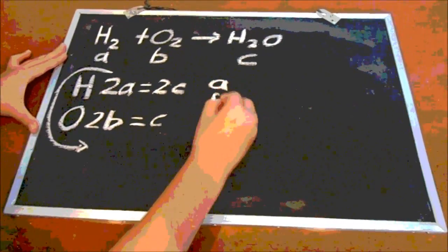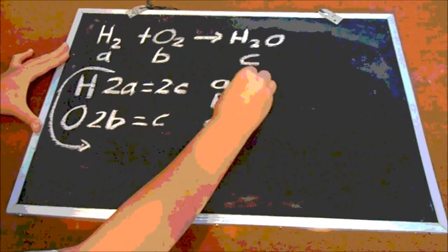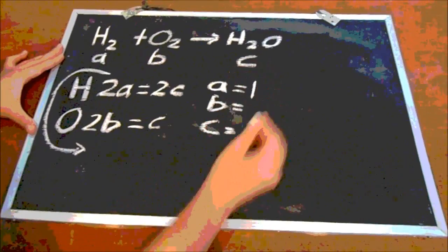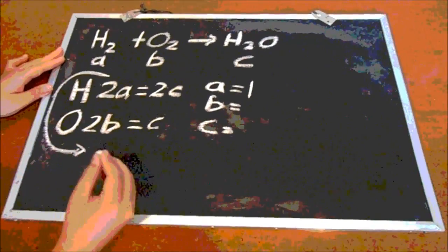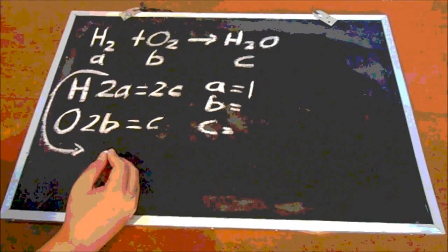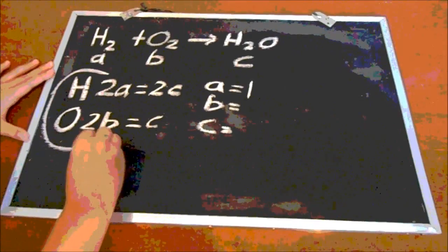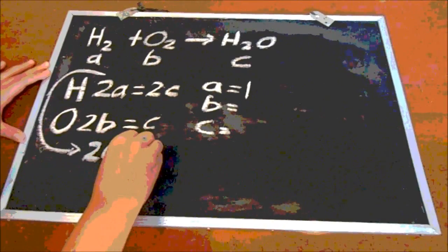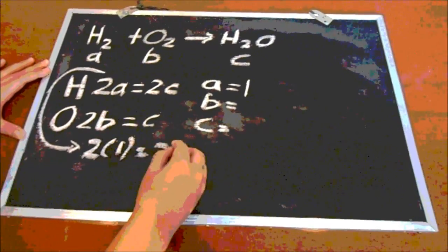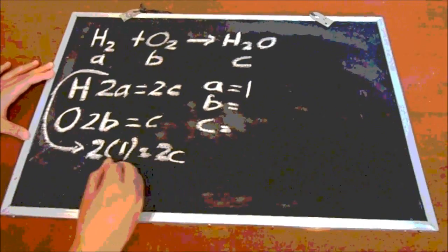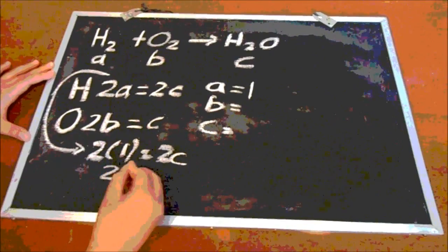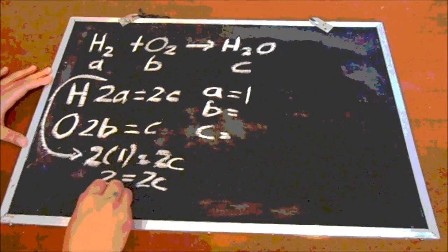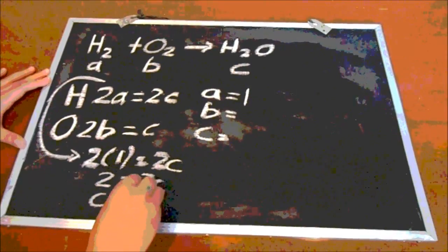Then we choose one of the variables and change it to 1. We use 1 to represent the variable. In this case, we choose B to become 1. So, 2 multiplied by 1 equals to 2C, which means 2 is equal to 2C. So, C is equal to 1.